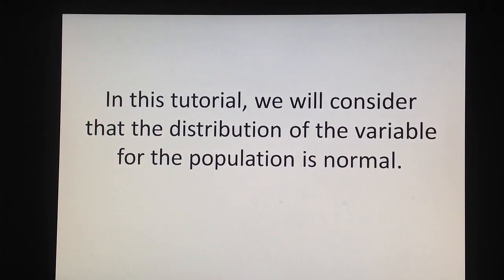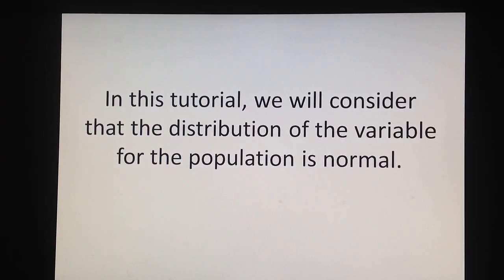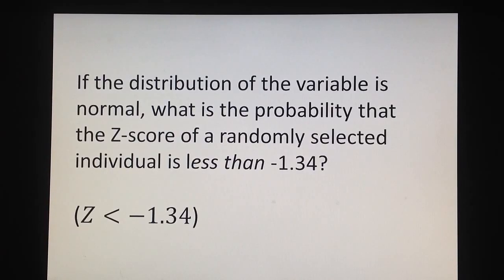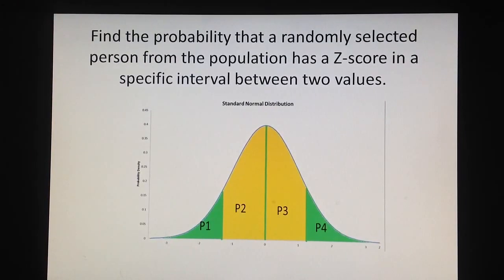In this tutorial we will consider that the distribution of the variable for the population is normal. And if the distribution of the variable is normal, what is the probability that the z-score of a randomly selected individual is less than negative 1.34? For example, my instructor told me that my score on the last test is negative 1.34. Well, I know it's a low score. My question is this,